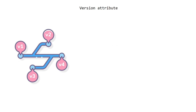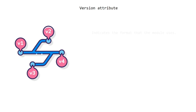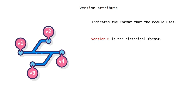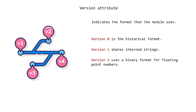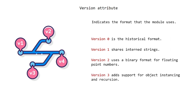Version attribute indicates the format that the module uses. There are five versions of the Marshall module. Version 0 is the historical format. Version 1 shares interned strings. Version 2 uses a binary format for floating point numbers. Version 3 adds support for object instancing and recursion. Version 4 is the current version.